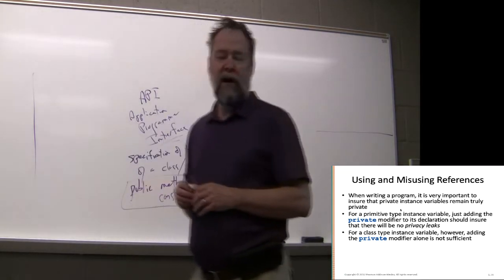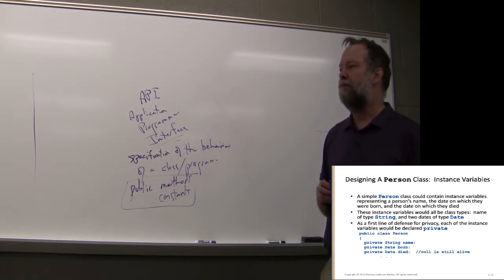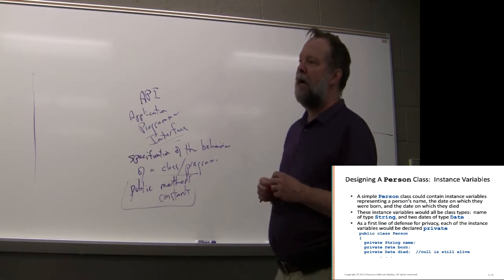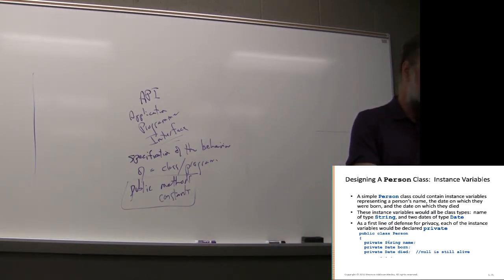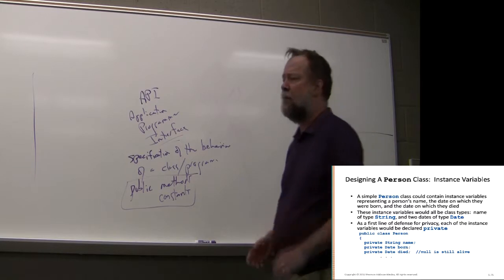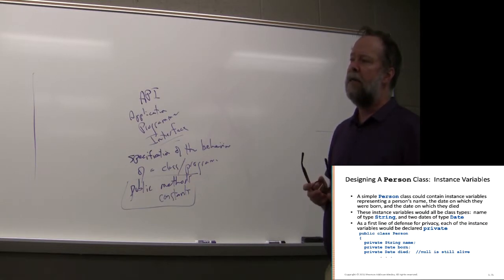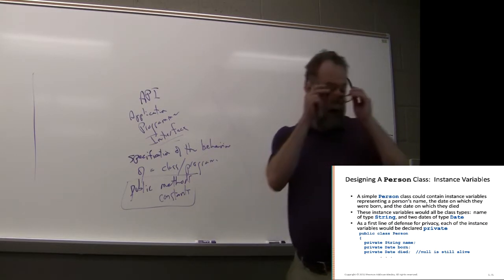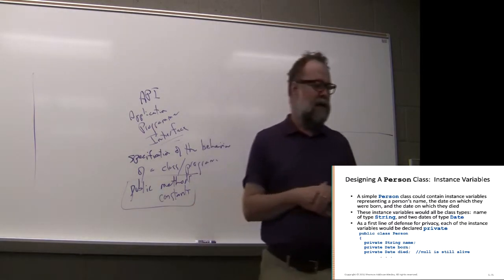We want our instance variables to be private, and for that to work properly, we have to avoid what are called privacy leaks. We'll have lots of demonstrations of what a privacy leak is and how we can avoid it. The textbook has a class called Person which is quite simple — each person has a name and two dates: a born date and a died date. The instance variables are mixed types: a String for name and Date objects for born and died.